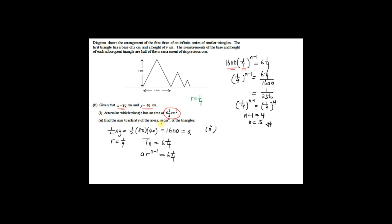Part B2: Find the sum to infinity of the areas in cm². Apply the formula S∞ = A ÷ (1 − R). With A = 1600 and R = 1/4: S∞ = 1600 ÷ (1 − 1/4) = 1600 ÷ (3/4). Using a calculator, the answer is 2133⅓ cm².